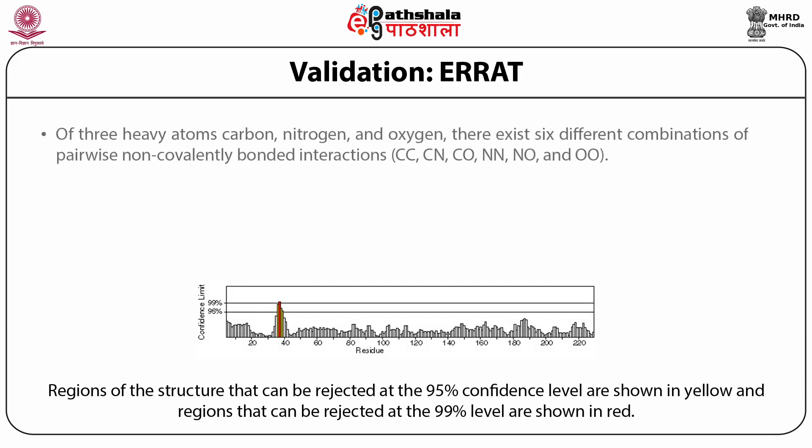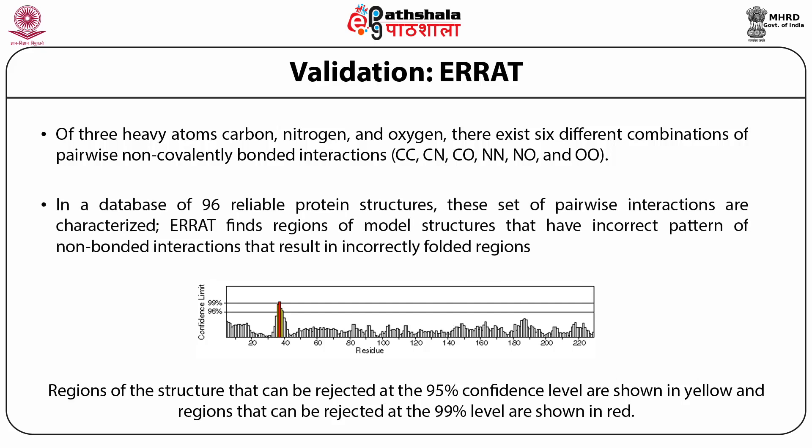Validation by ERRAT: Of the three heavy atoms — Carbon, Nitrogen, and Oxygen — there exist six different combinations of pairwise non-covalently bonded interactions: C-C, C-N, C-O, N-N, N-O, and O-O. In a database of 96 reliable protein structures, these pairwise interactions are characterized, and the program ERRAT finds those regions of the model structures that have incorrect patterns of non-bonded interactions resulting in incorrectly folded regions. Regions that can be rejected at 95% confidence are shown as yellow bars, and regions rejected at 99% confidence are shown as red bars.